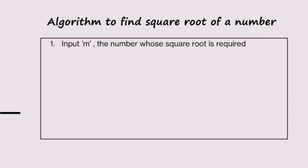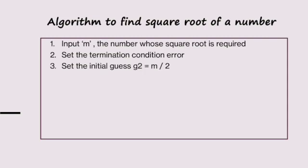Algorithm to find the square root. Input m, the number whose square root is required. Termination condition error, say 0.001 or 0.0001, that is the error value set. Initial guess is the number divided by 2. This is better.